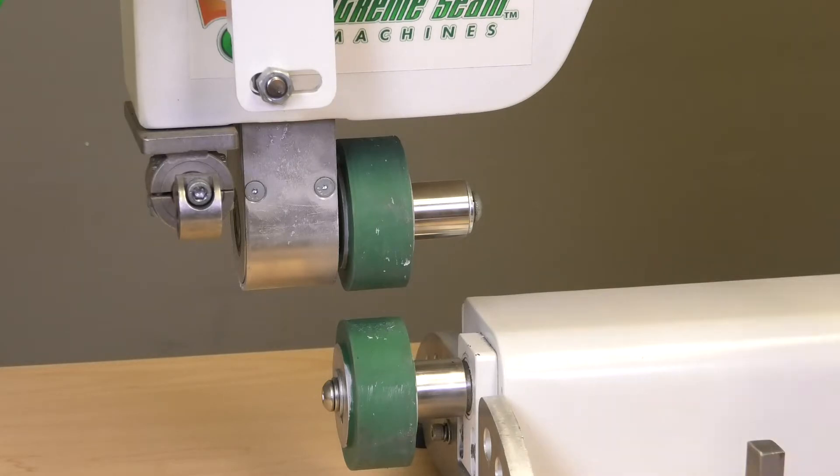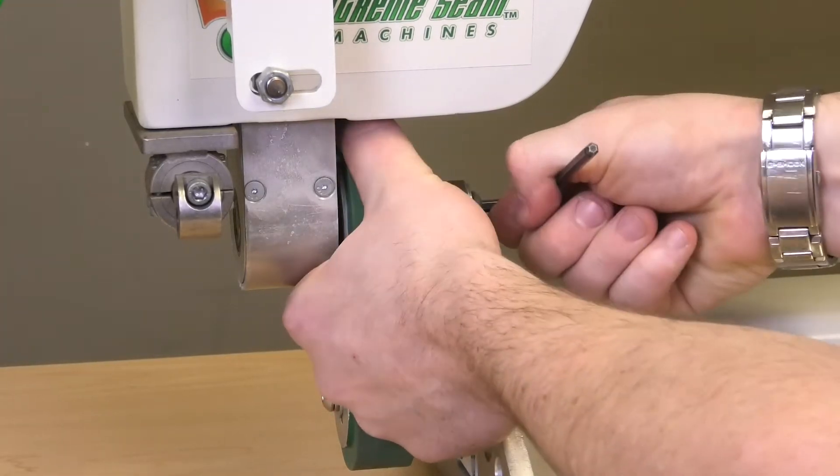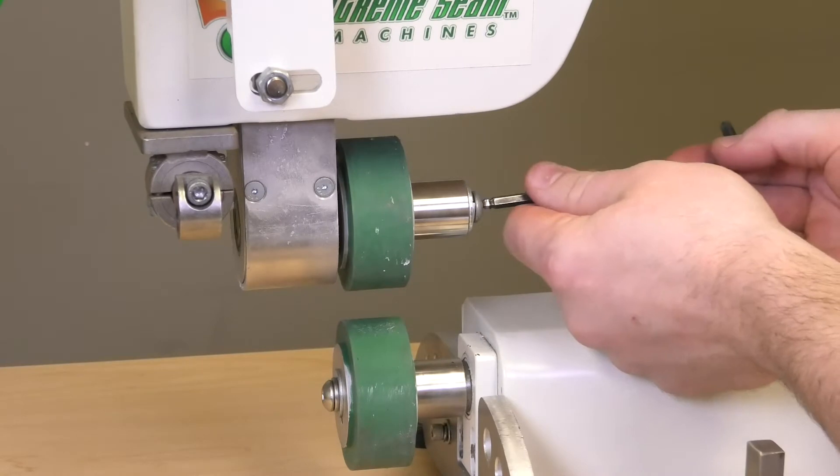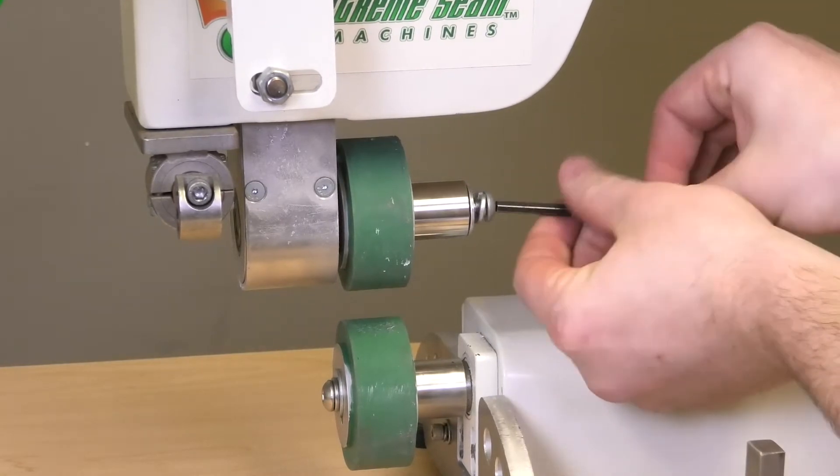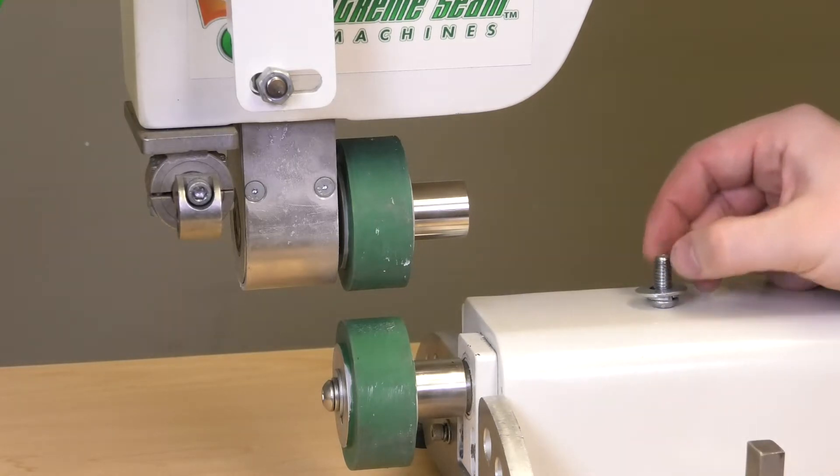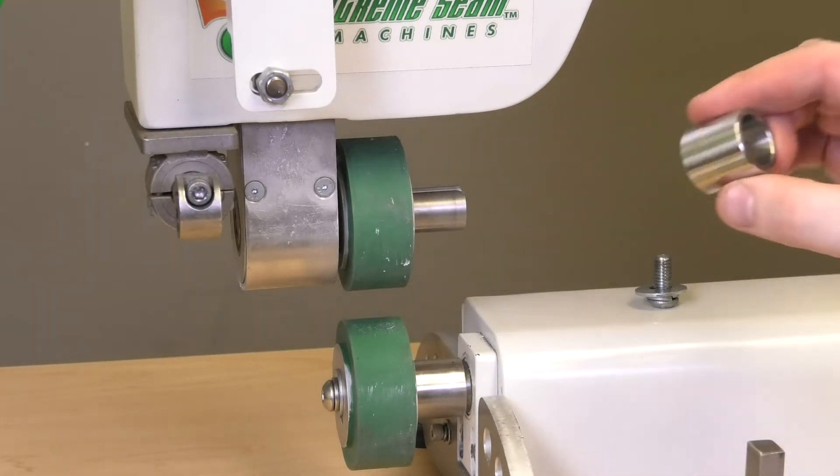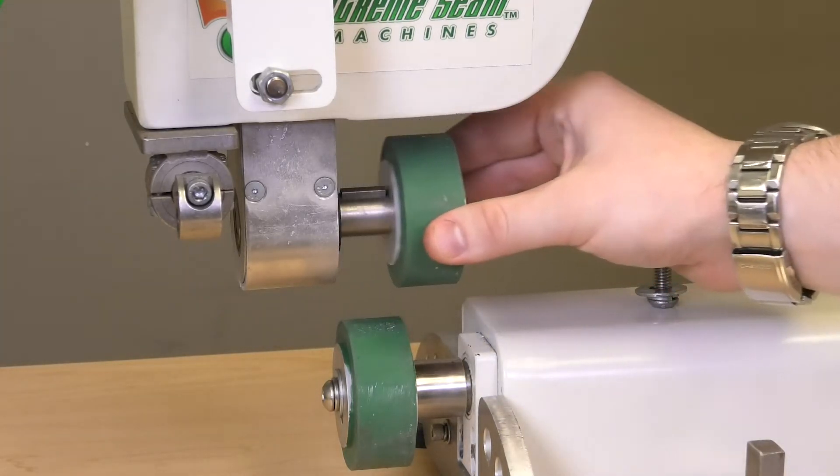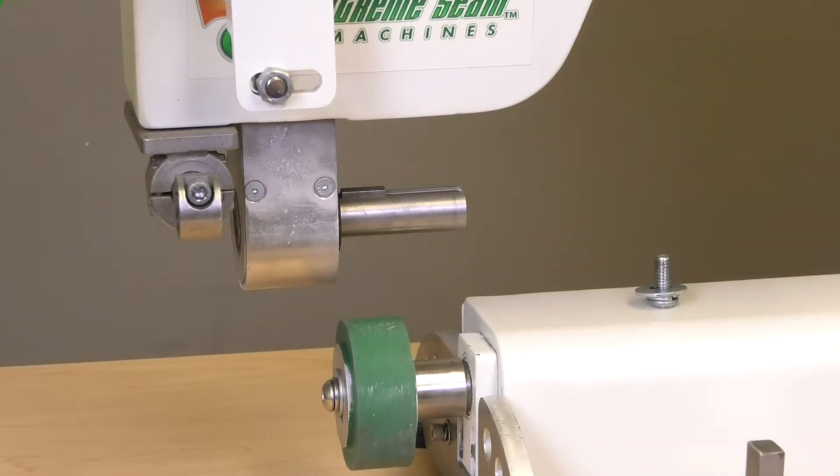First we're going to start with the weld rollers. We're going to take our allen wrench and loosen this bolt on the inside of the upper wheel. We're going to spin that and pull this out, setting this there, pulling out our spacer. Then we're going to slide the first wheel off.